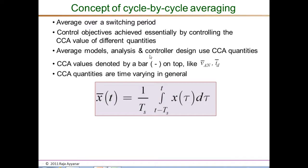The CCA of a signal is denoted with a bar on top. For signal X(t), its CCA value X-bar(t) is defined as the integral of X(t) over one complete period from t minus T_S to t, divided by T_S. This gives the average over that particular switching period.